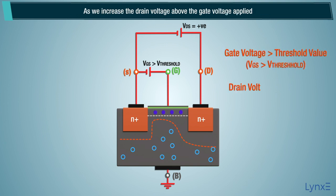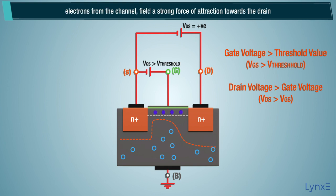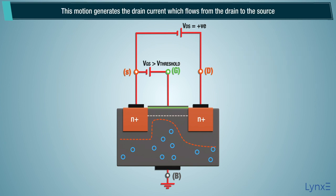As we increase the drain voltage above the gate voltage applied, electrons from the channel feel a strong force of attraction towards the drain and start flowing from the source to the drain through the channel. This motion generates the drain current which flows from the drain to the source.